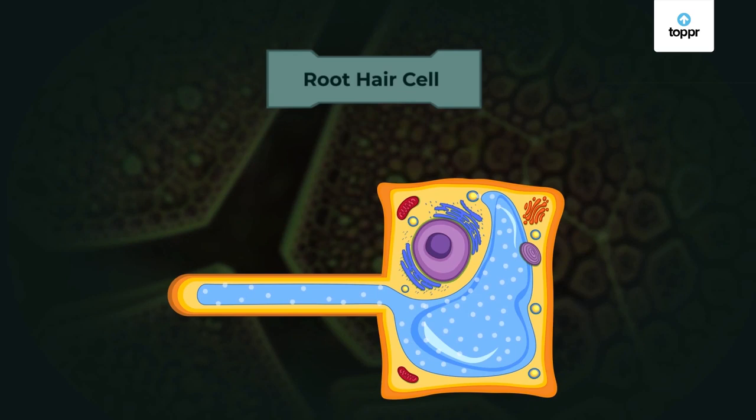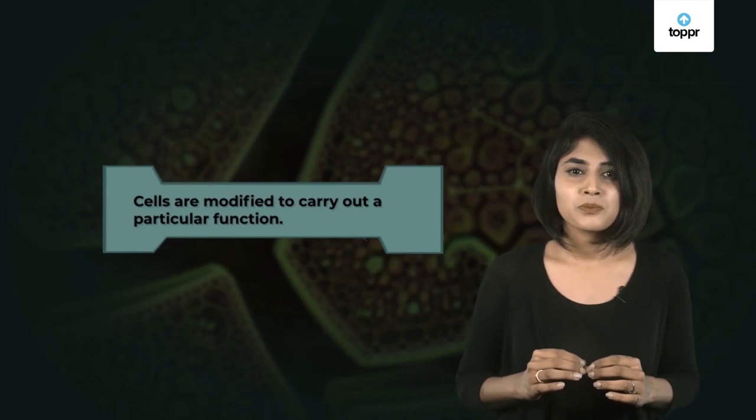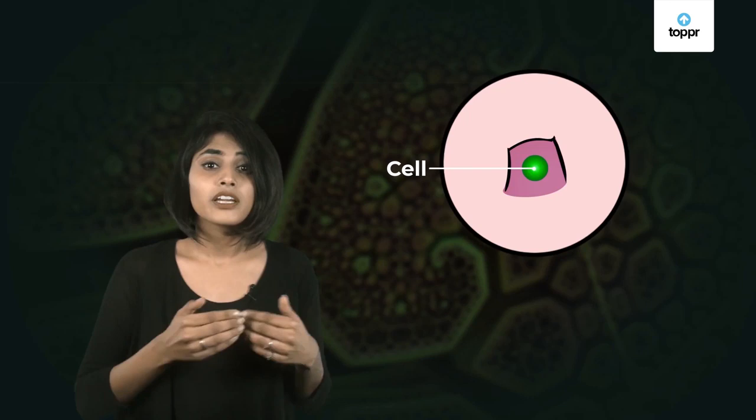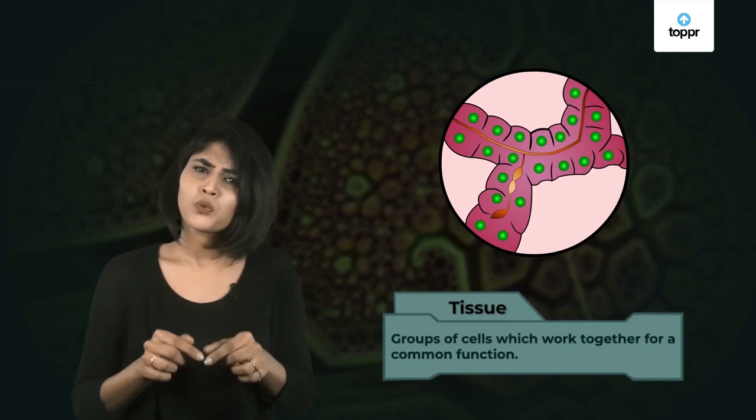That's what a root hair cell, which is specialized to absorb water and minerals, looks like. Just like in our example, in all multicellular organisms cells are modified to carry out a particular function — these cells are called specialized cells. Sometimes these specialized cells work individually, and sometimes many specialized cells come together and work as a team towards a common function. Such groups of cells which work together for a common function are called tissues. This word 'tissue' was coined by Marie François Xavier Bichat, a French scientist and the first ever person to study tissues.